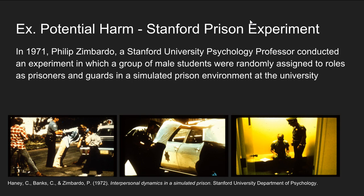It's helpful to look at some historical examples of ethical violations in research. One particularly notorious example was the Stanford Prison Experiment. In 1971, Philip Zimbardo, a Stanford University psychology professor, conducted an experiment in which he randomly assigned a group of male students to roles as either prisoners or guards, and set up a simulated prison environment in the basement of the psychology department at Stanford University.